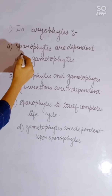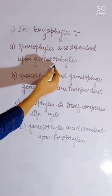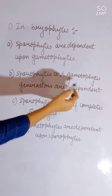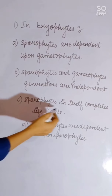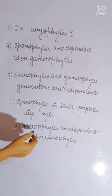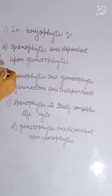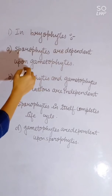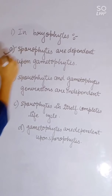In bryophytes: sporophyte is dependent upon gametophyte; sporophyte and gametophyte generations are independent; sporophyte completes its life cycle independently; or gametophyte is dependent upon sporophyte. Correct answer is A — the sporophyte is dependent upon the gametophyte in bryophytes.